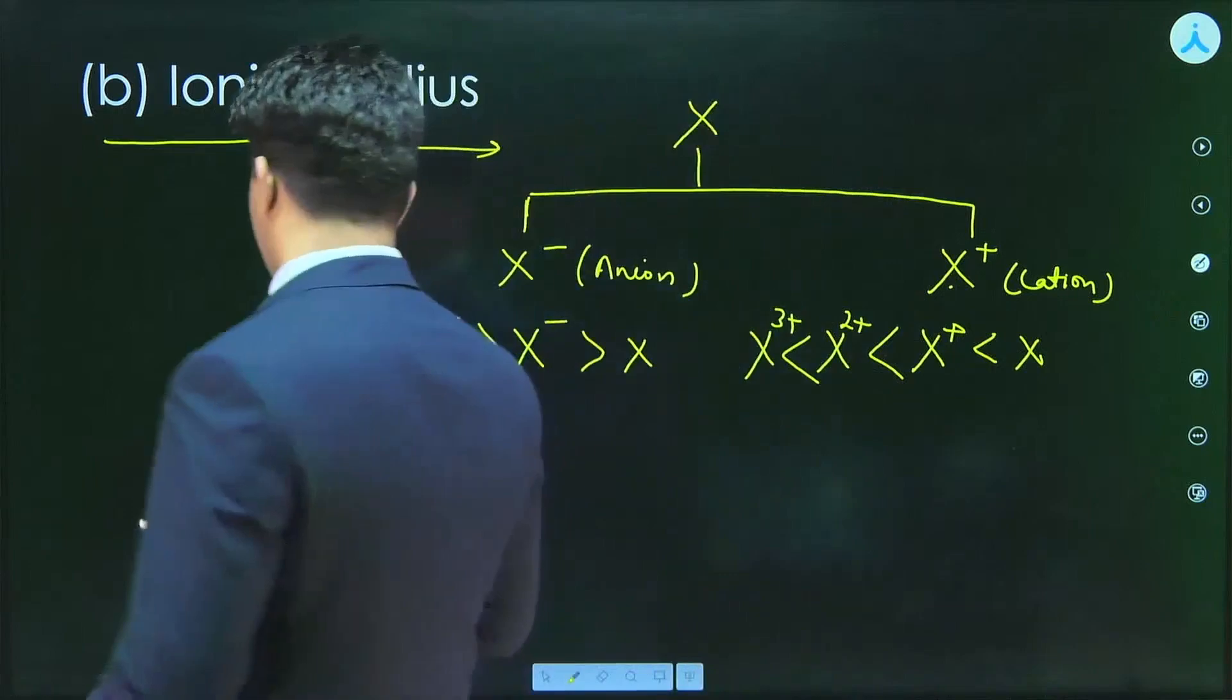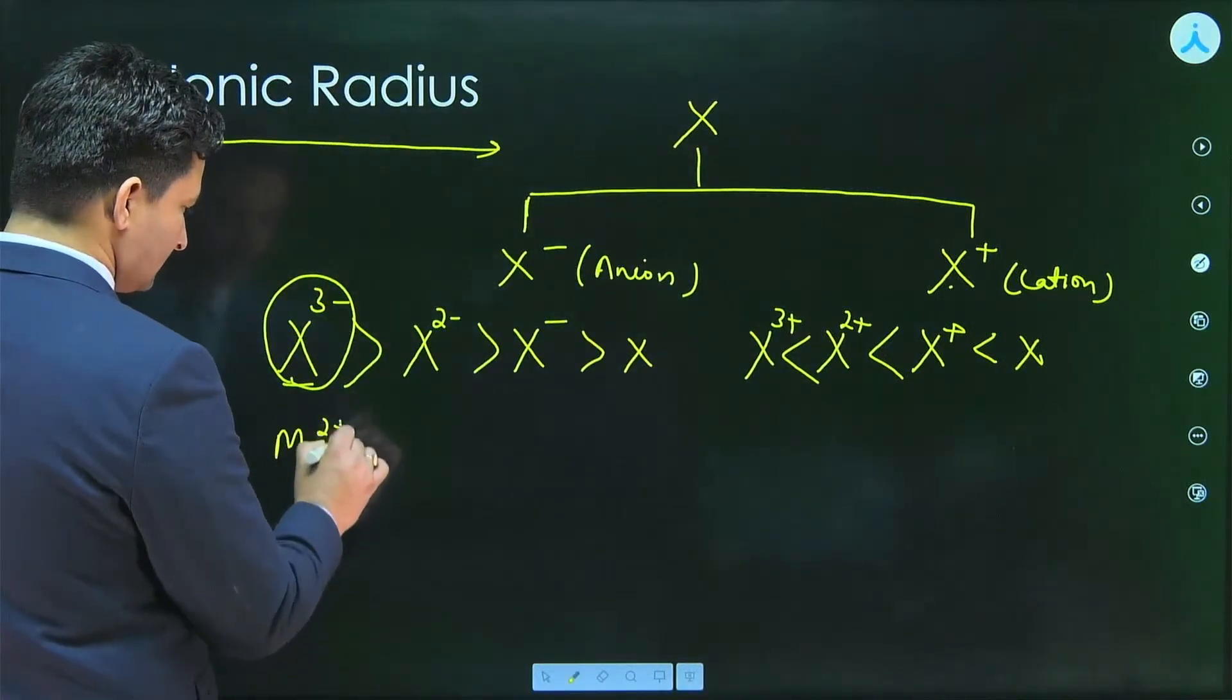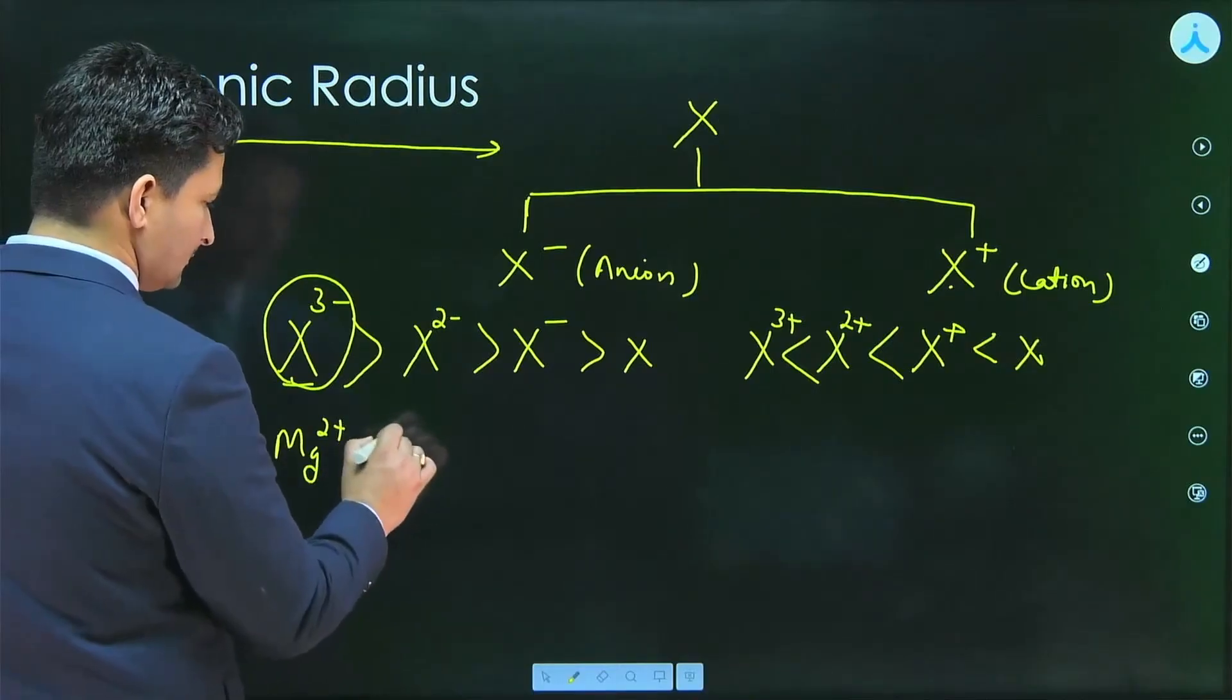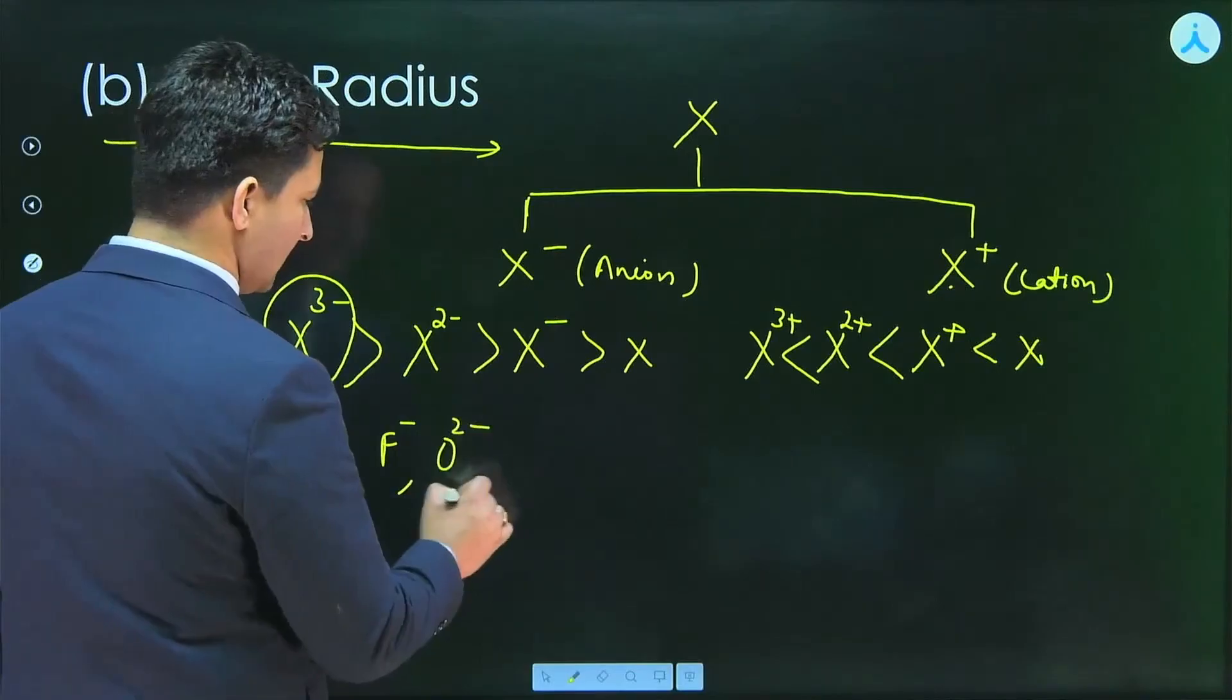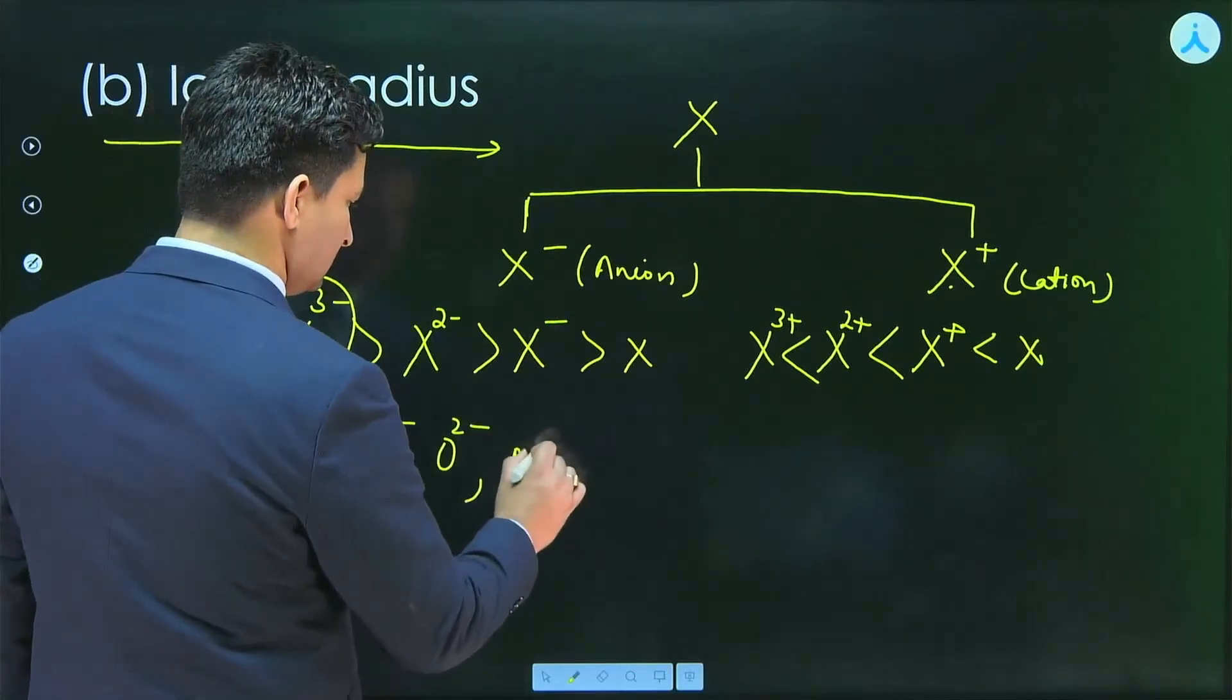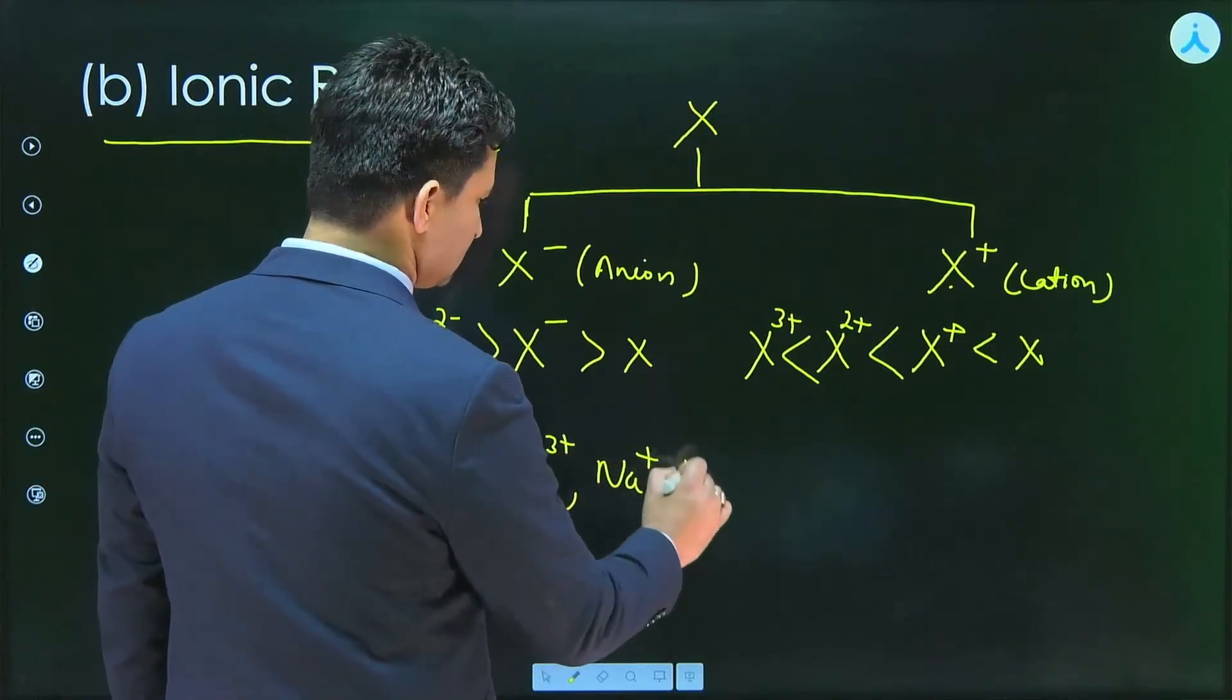Suppose we take an example. We have to arrange Mg2 plus, F minus, O2 minus, Al3 plus